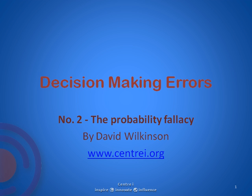Hello, I'm David Wilkinson. I'm the director of Centre Eye and the author of The Ambiguity Advantage. In this, the second of the short series of two to three minute videos on decision-making errors, we're going to have a look at a thing called the probability fallacy. I'm going to give you a couple of examples first, then explain what it is, and then give you a few more examples.